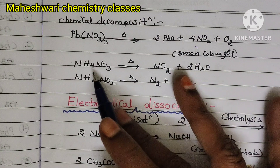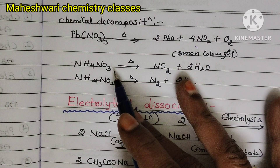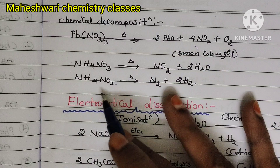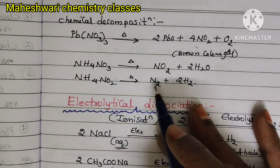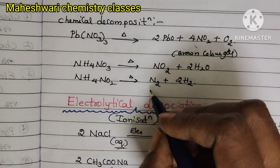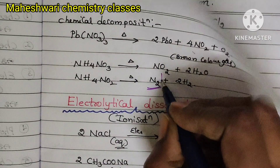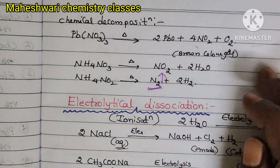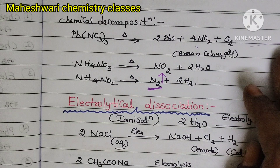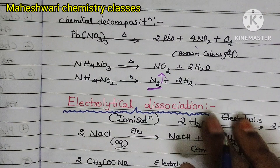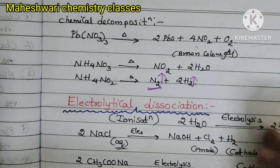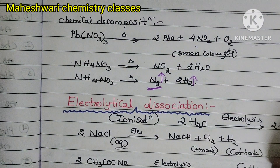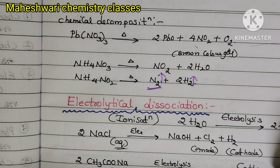Ammonium is NO3, but here it is NO2. Nitrogen gas is very important. At the same time, hydrogen gas is also released. This is about chemical decomposition.